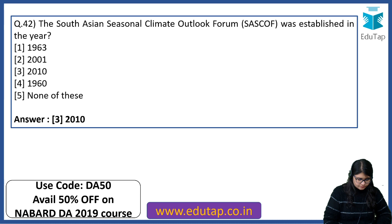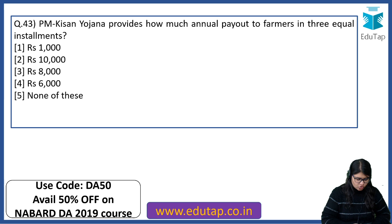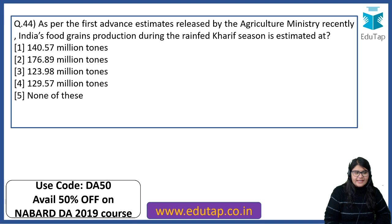PM Kisan Yojana provides how much annual payout to farmers in 3 equal installments? There are 3 installments in total — the answer is Rs. 6000. As per the first advance estimates released by the Agriculture Ministry, India's food grains production during the rain-fed Kharif season is estimated at 140.57 million tons.